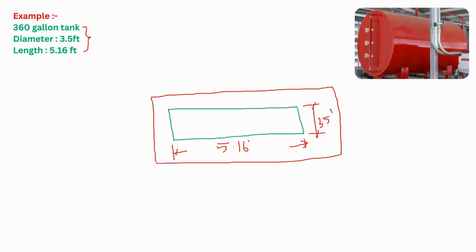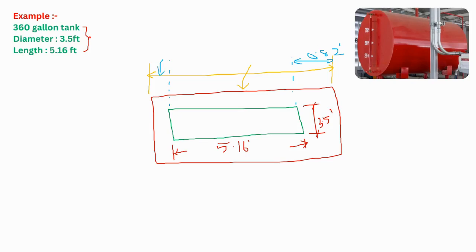Assuming this is the top view of the secondary containment or bund walls, we assume that this bund wall provides a buffer of about 1.64 feet on all sides of the diesel tank in the design. That means on each side the dimension will be 0.82 feet, so 0.82 plus 0.82 equals a total of about 1.64 feet buffer on all sides of the tank.